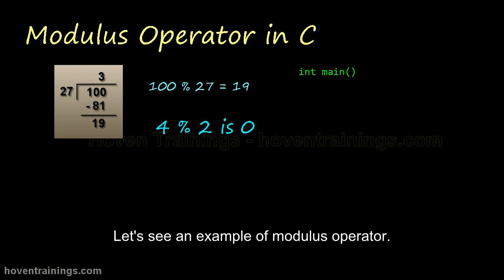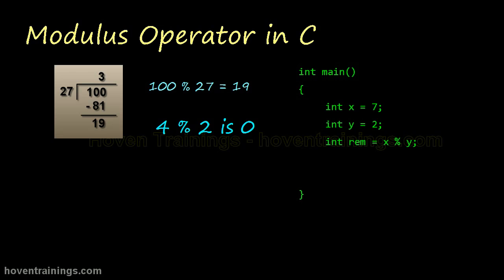Let's see an example of the modulus operator. The remainder after division of X by Y is X mod Y. This statement displays 1.